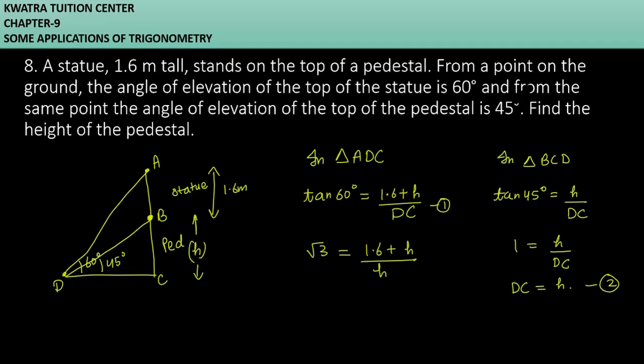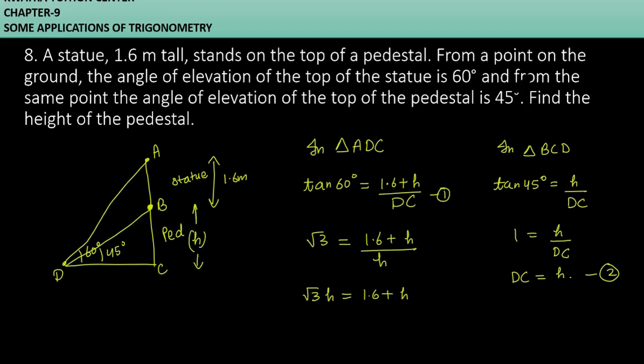Now we will use the cross multiplication method to get the value of H. So root 3 H equals 1.6 plus H. Root 3 H minus H equals 1.6. H times root 3 minus 1 equals 1.6.